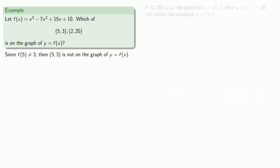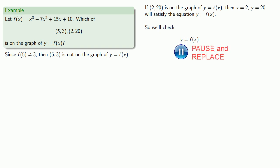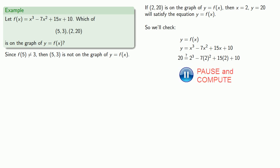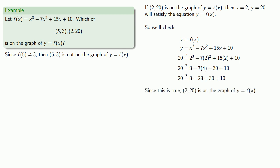Similarly, we can check to see if (2, 20) is on the graph of y equals f of x. Equals means replaceable, so making all of our replacements and doing a little arithmetic, this is a true statement. So (2, 20) is on the graph of y equals f of x. We can summarize: since f of 2 is equal to 20, then (2, 20) is on the graph of y equals f of x.